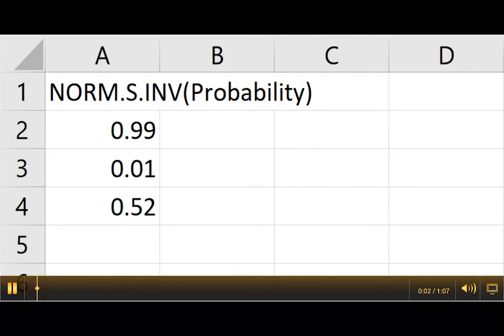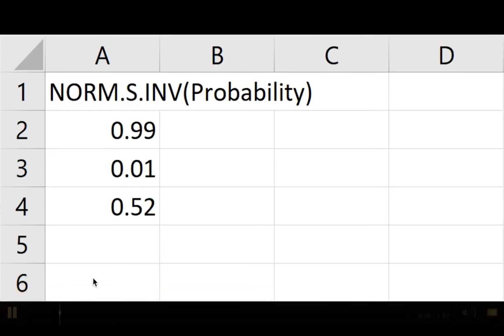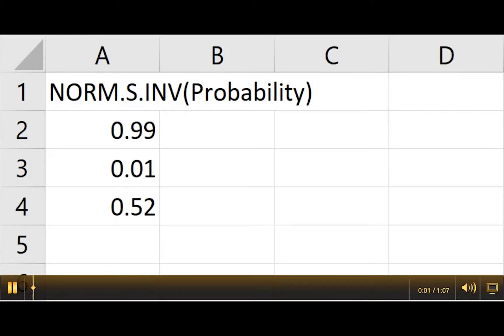There will be some situations where we need to look up a z value from a percentage, and there is an Excel formula that will do that for you. The formula is norm.s.inv.